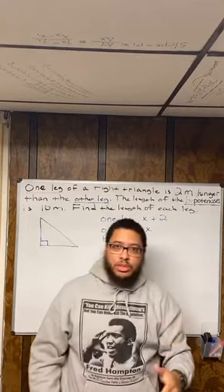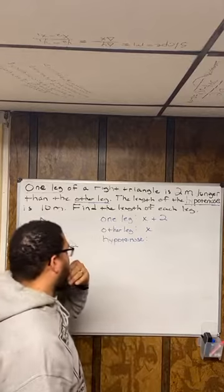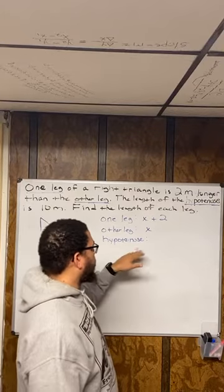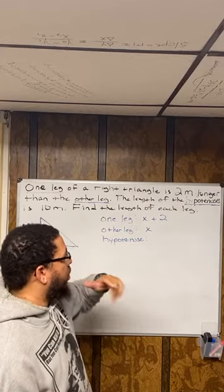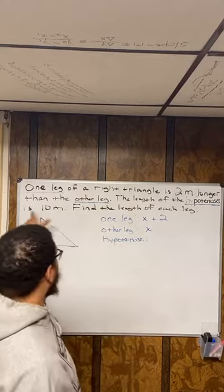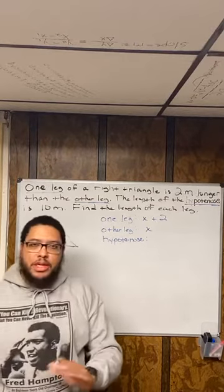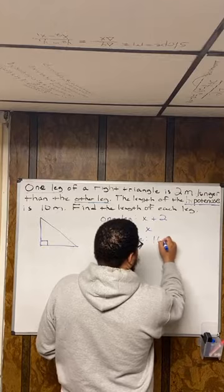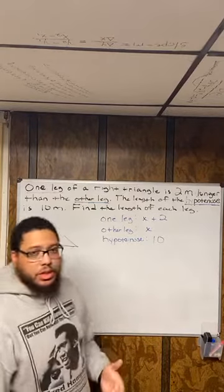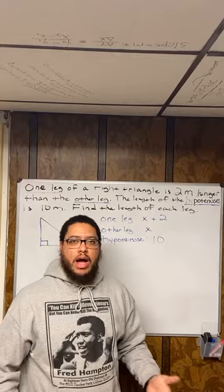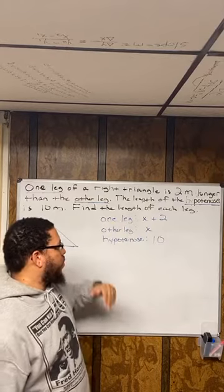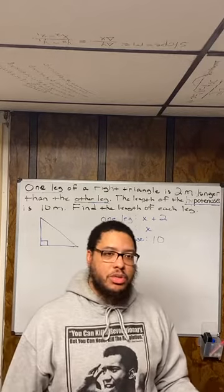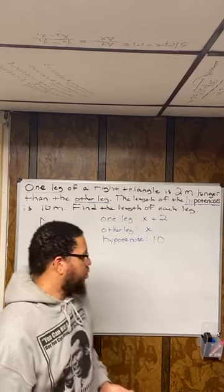So now, our one leg is represented by X plus 2, the other leg is represented by X, and the hypotenuse — what's the hypotenuse going to be represented by? The length of the hypotenuse is 10 meters. There's no algebraic expression for that, it's just 10 meters. So we just write a 10. Now, you might be wondering, what's the purpose of doing all this? Why am I writing X plus 2 in the place of one leg? Because we want to create an equation, and once we create an equation, we need to use variables. That's the purpose.